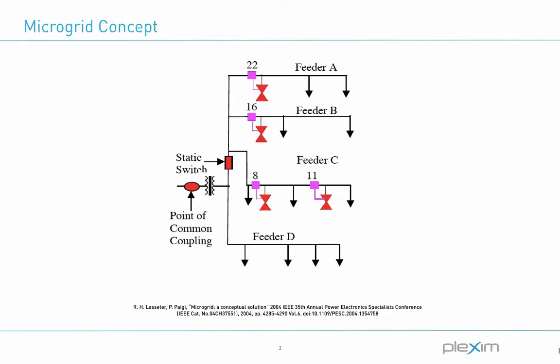There is a single point of connection to the utility called point of common coupling. Some feeders such as feeders A, B, and C have sensitive loads which require local generation. The non-critical load feeders such as feeder D do not have any local generation.